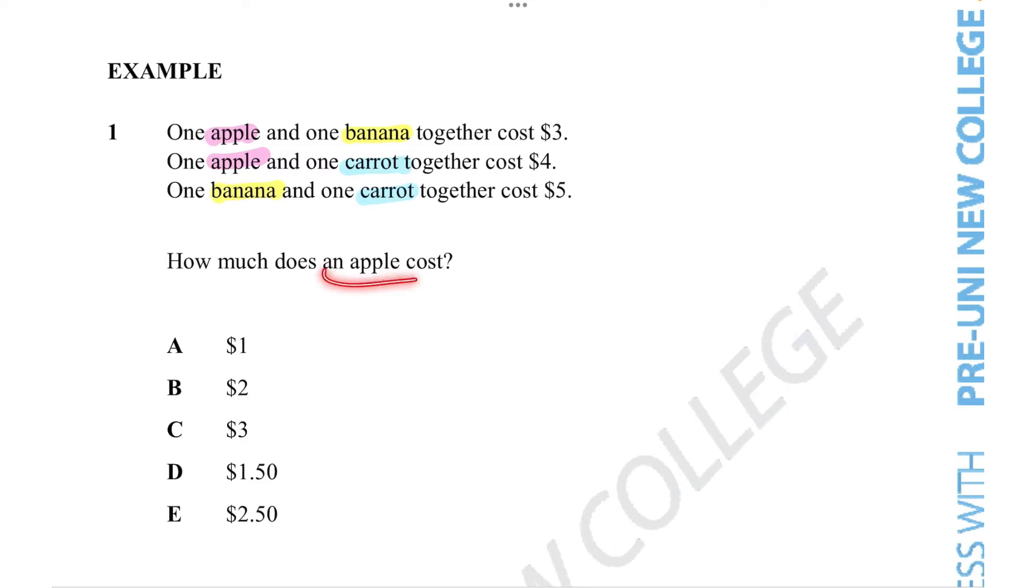We want to know how much just one apple costs. Since we're given the costs of combinations of fruits, we can't just figure it out. We're going to need to use some algebra.